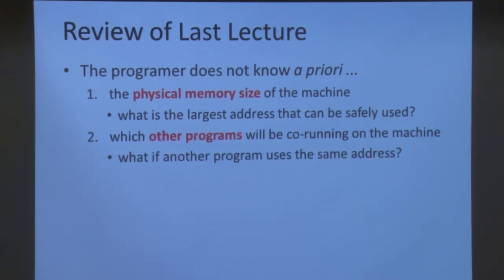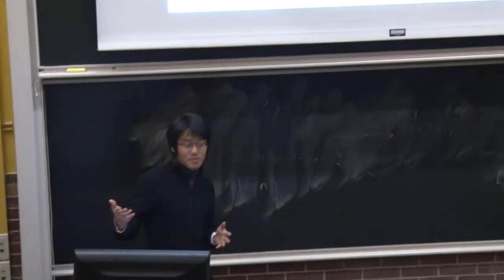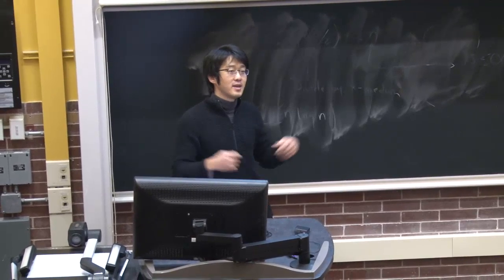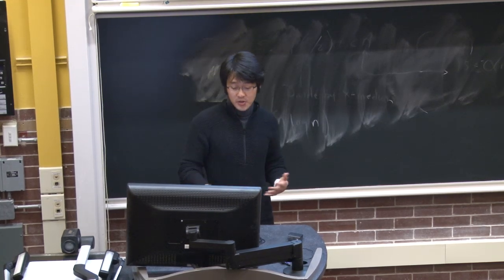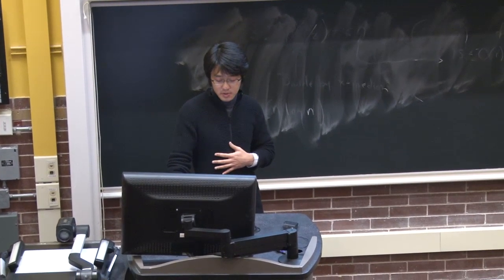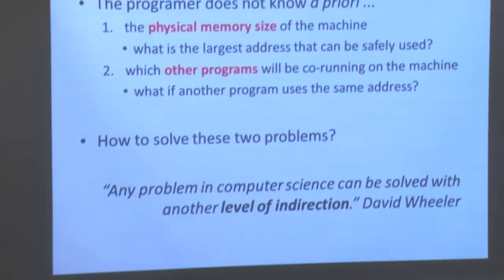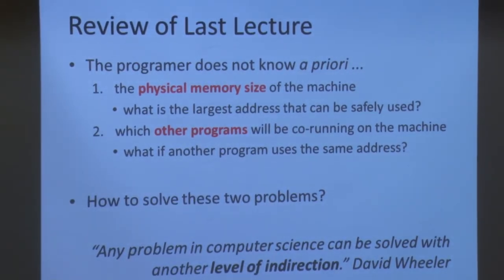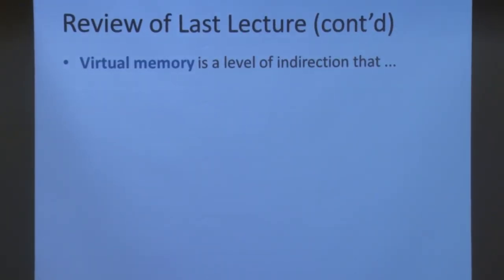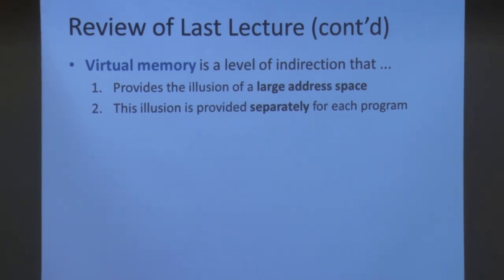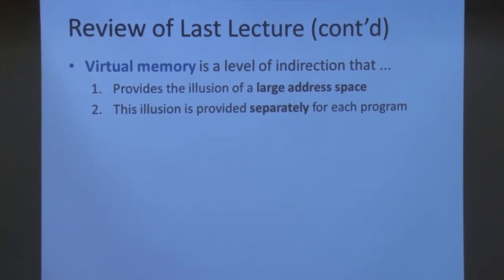The second thing the programmer does not know is which other programs will be co-running on the machine. For example, if my program decided to use address zero, but the user happened to run my code alongside other programs that also use address zero, there would be a conflict and the two programs might corrupt each other's state. David Wheeler said it best: any problem in computer science can be solved with another level of indirection. Virtual memory is a level of indirection that provides the illusion of a large address space, provided separately for each program.